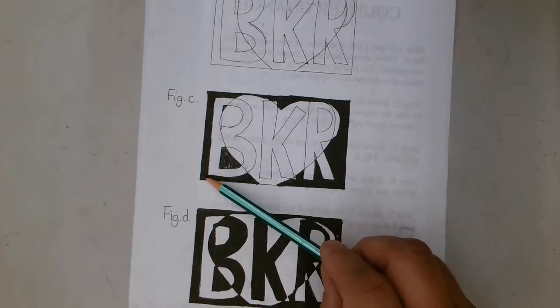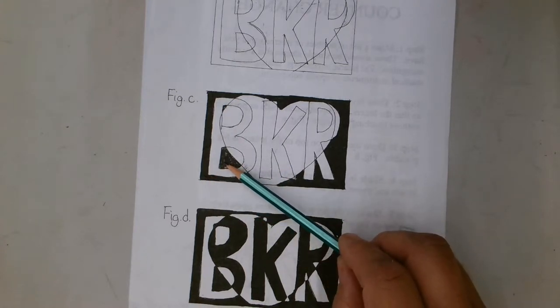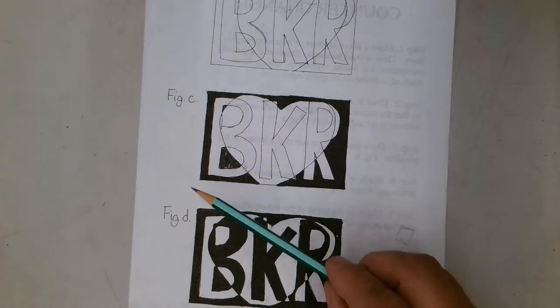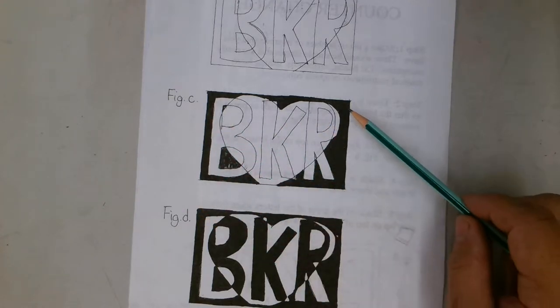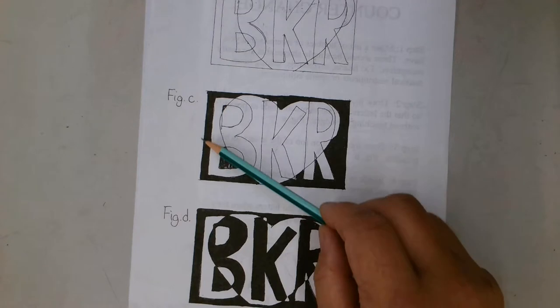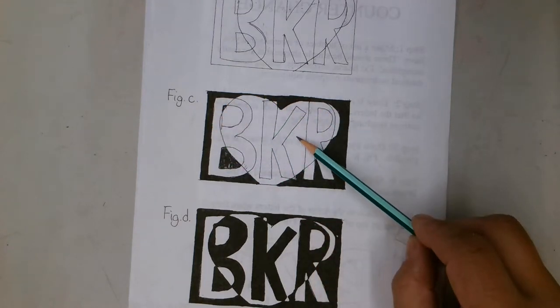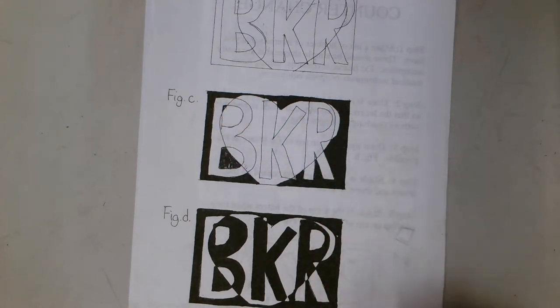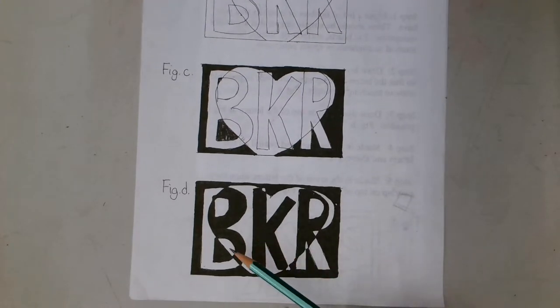This is the background area behind the letter B, so it gets shaded in. So you're going to shade in figure C directions. Everything that's the background, and if it is the symbol or the letters, don't touch it.